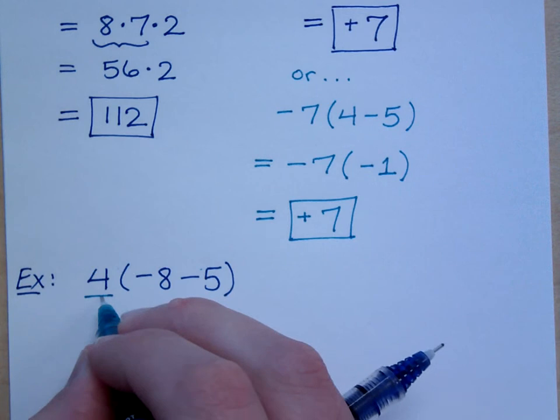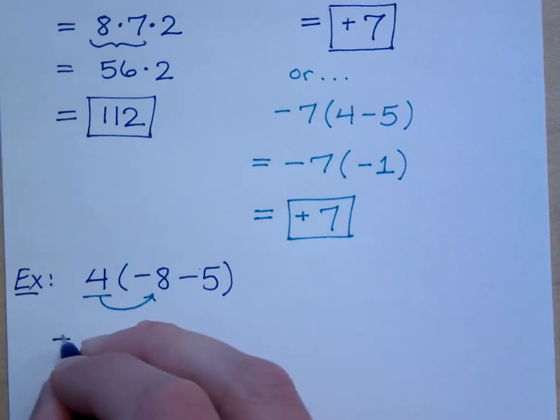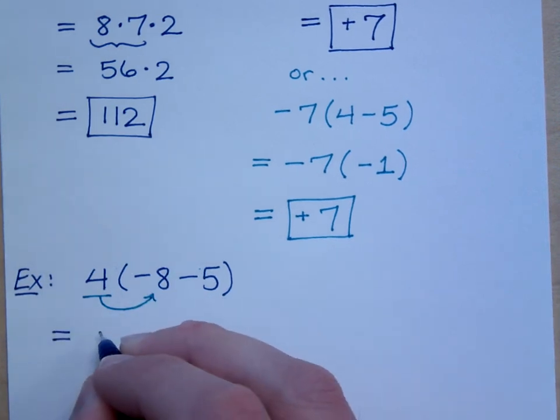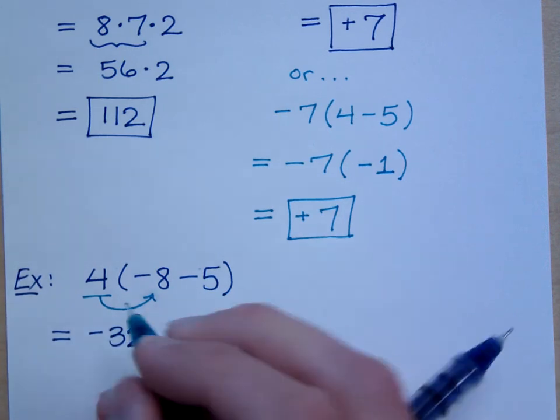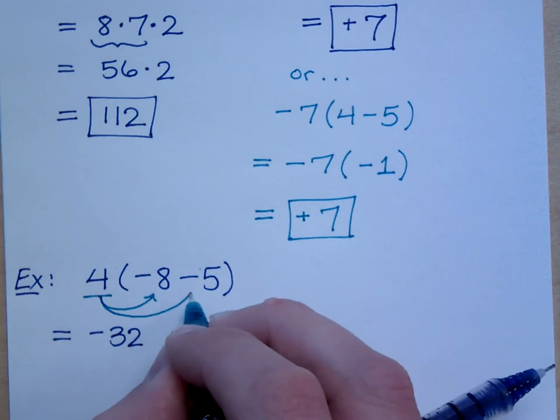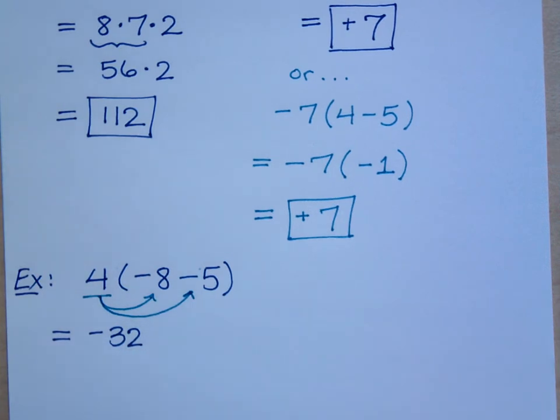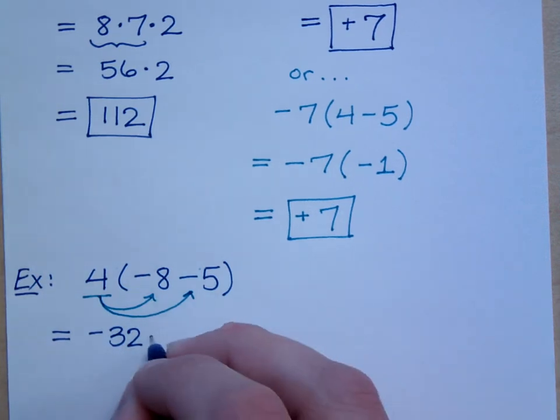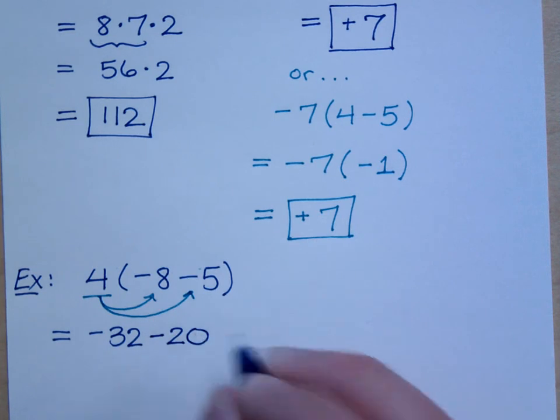What's 4 times negative 8? Negative 32. Negative 32. And then you have 4 times what? Negative 5. What's 4 times negative 5? Negative 5.